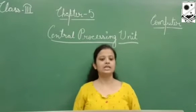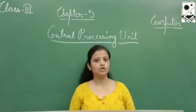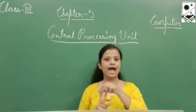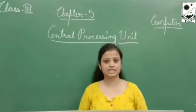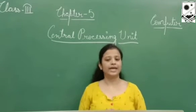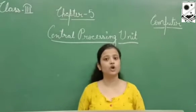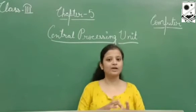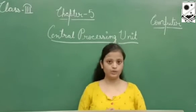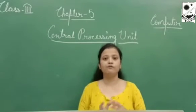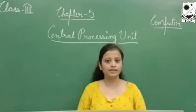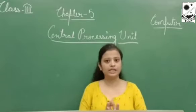Now, the three main parts of the CPU are ALU, CU, and MU. Let's first discuss ALU. ALU stands for Arithmetic and Logic Unit. All the calculations and arithmetic operations are performed in the ALU. For example, if you want to add 5 plus 4, then the calculation related to that question will be done in the ALU part of the CPU.